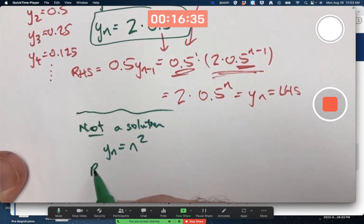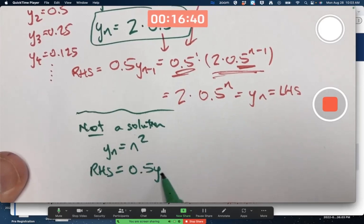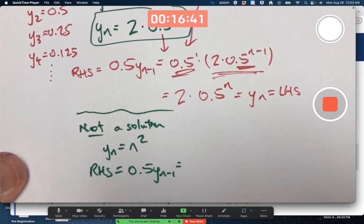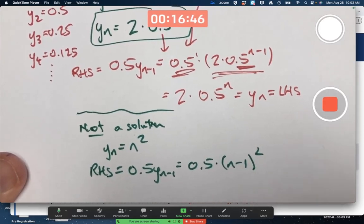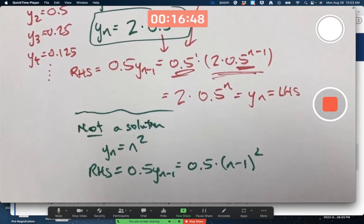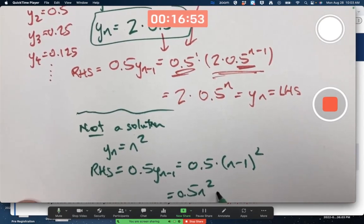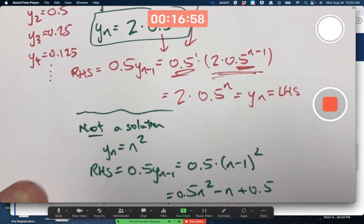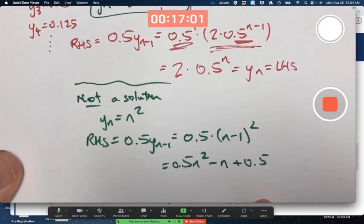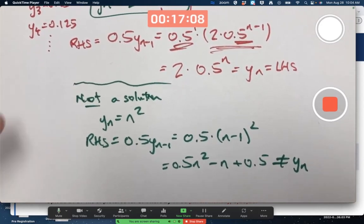Why? Because if you did the right-hand side of the difference equation, which was 0.5 times y_n minus 1 and plug this function in there, replace n with n minus 1 and then simplify, you do not get y_n. What do you get? Well, you get 0.5 n squared. Let's see. It would be minus n plus 0.5 if you simplify all that. I just did that in my head. And that does not equal y_n. This is not a solution.